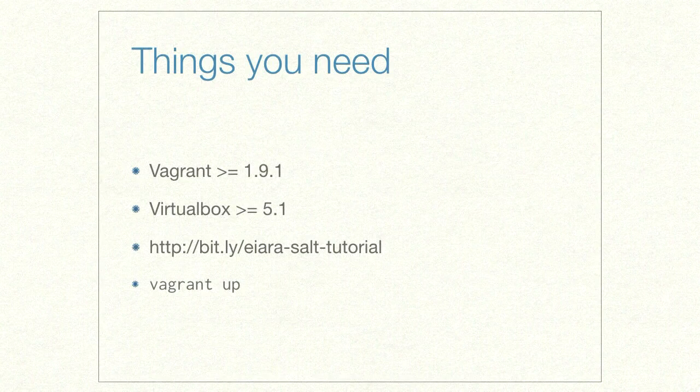To do that we're going to attempt to bring down the conference Wi-Fi, because we need to download about a gig and a half of VM images each. The things you need are Vagrant version 1.9.1, VirtualBox version 5.1, and there's a Bitly link to the GitHub tutorial. Once you have those pieces, you can do 'vagrant up' which will start downloading a gig and a half of stuff.